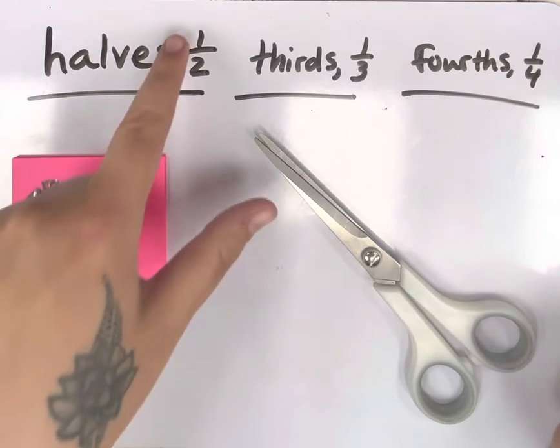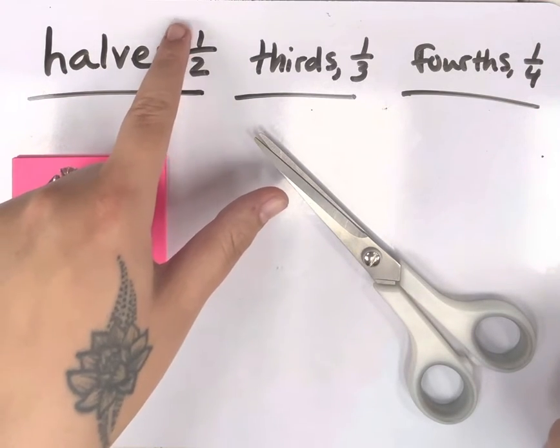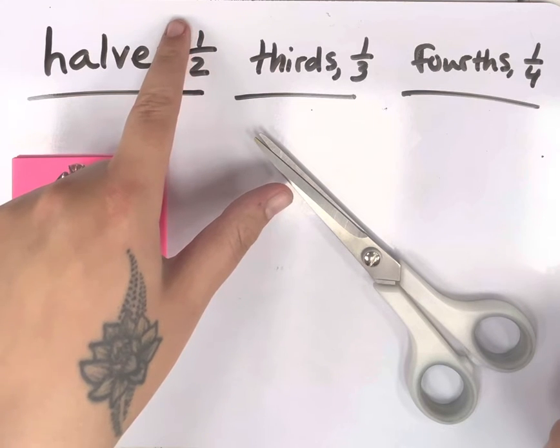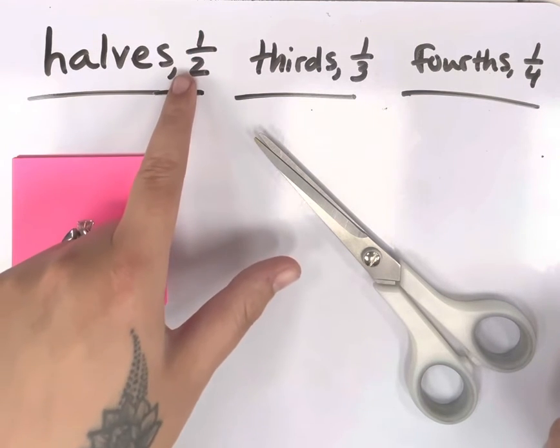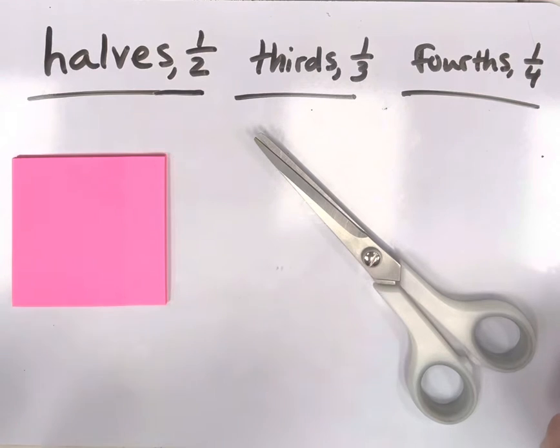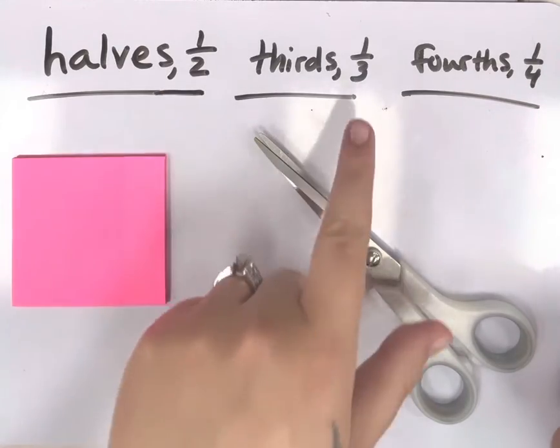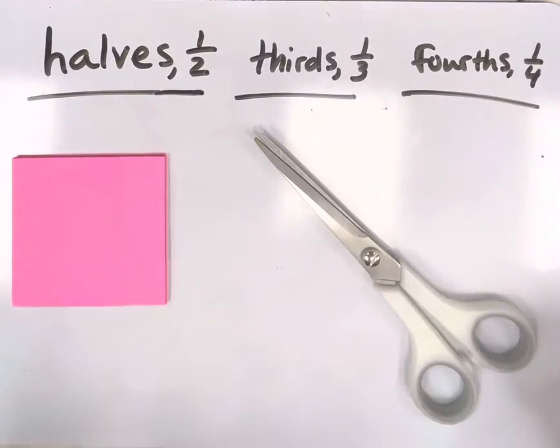Just a reminder, our numerator tells me how many pieces of that type I have. Our denominator tells us how many pieces we should have total. So we're going to make two parts here, three parts here, and four parts here. Halves, thirds, and fourths. I made you and your box some nicer labels so you don't have to write them. But for my example, I'm going to do this.